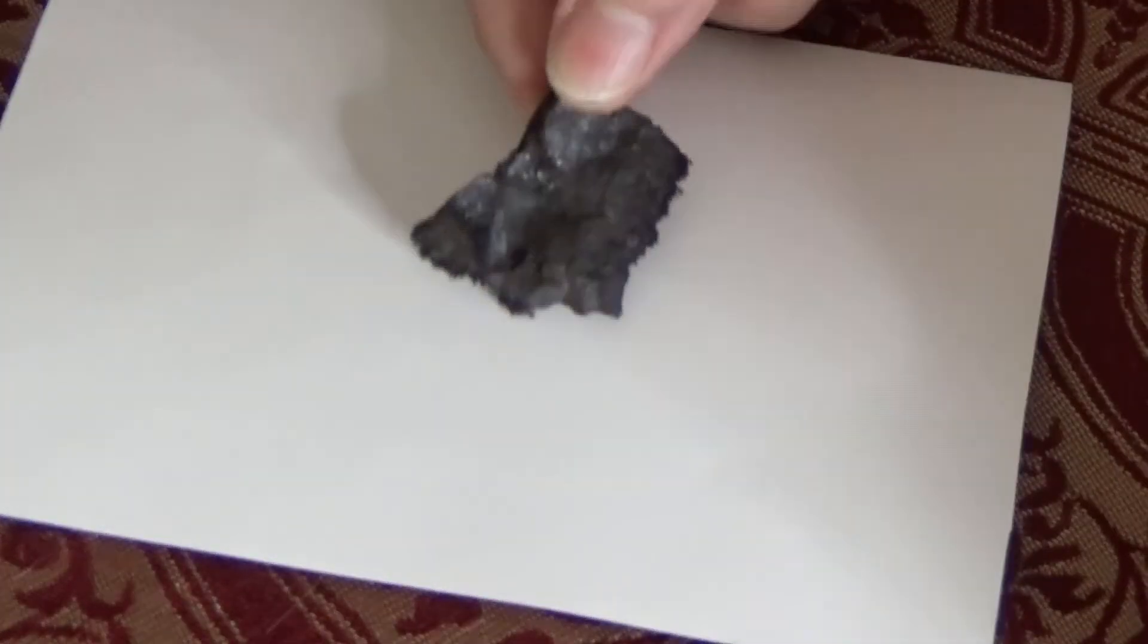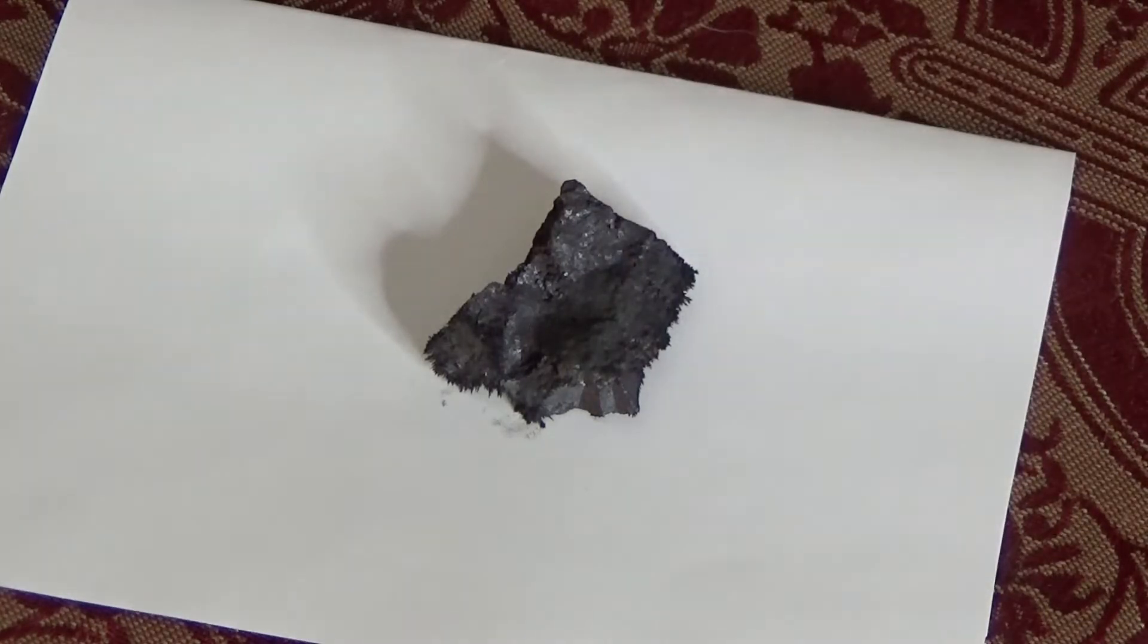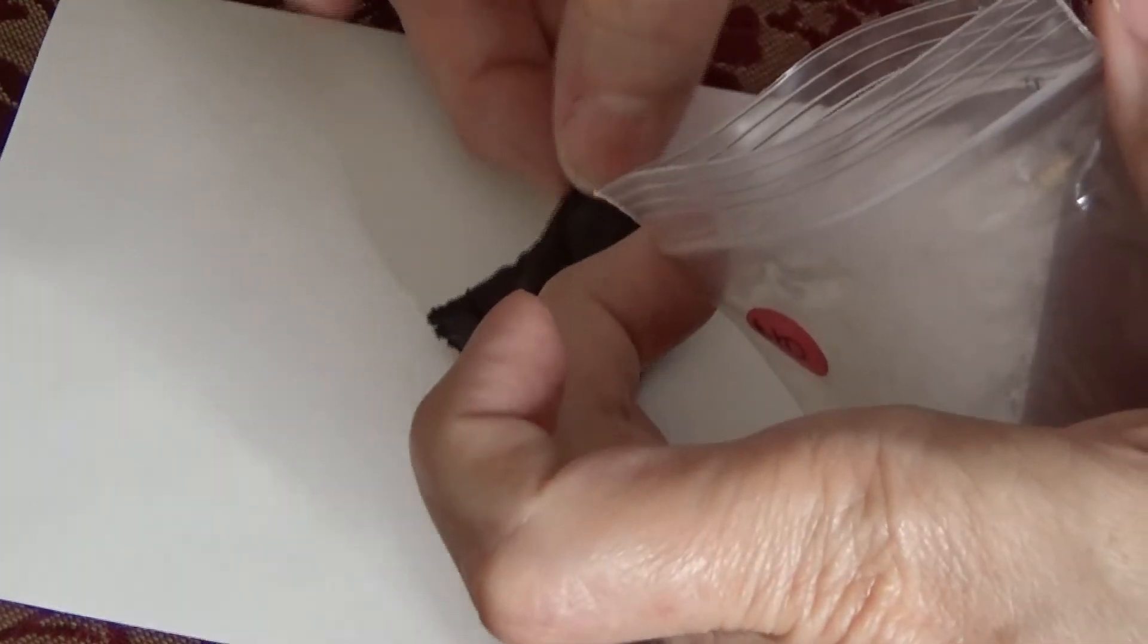Next is a stone called lodestone. This is a magnetic iron ore you find occurring in nature. It's magnetic and is used typically to draw in money, but it can be used to attract or draw in anything that you desire. It's a stone for drawing in, so I thought that would be kind of neat to have.